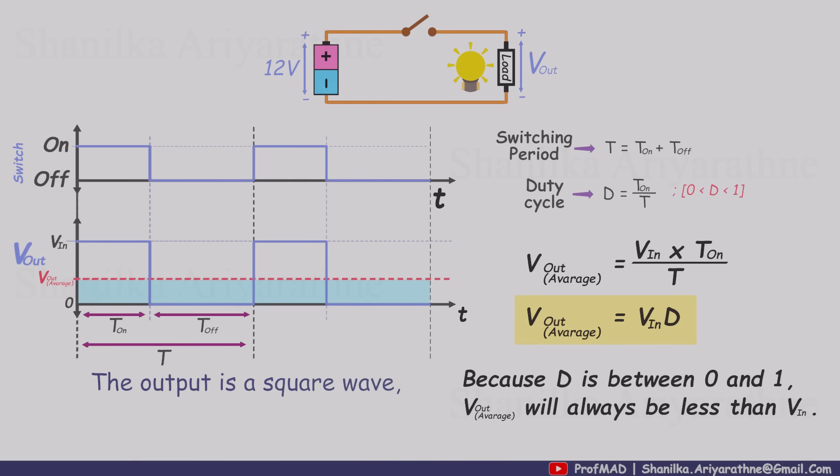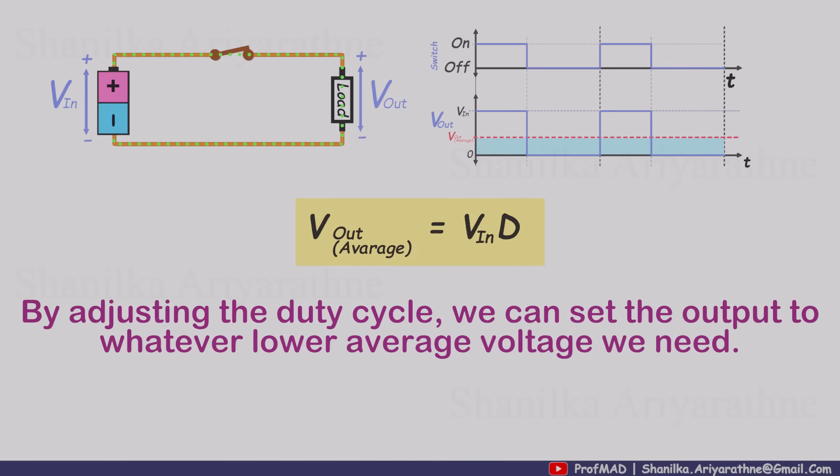And because the duty cycle is always less than one, the output voltage is always lower than the input voltage. That's the foundation of a buck converter. By adjusting the duty cycle, we can dial the average output voltage down to whatever lower level we need.